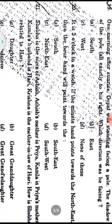Question nineteen: One morning after sunrise, Gopal was standing facing a pole. The shadow of the pole fell exactly to his right. In the morning, the sun rises in the east, so shadows fall to the west. If the shadow is to his right, Gopal is facing south. Option A, south, is the answer.